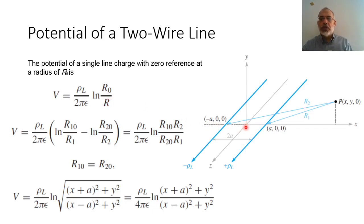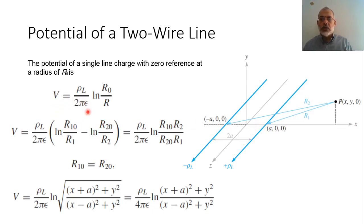Assuming that the potential equals zero between the two lines, the origin is taken as the reference point where V = 0. We have a positive line charge +rho_l and a negative line charge -rho_l. The potential contribution due to the positive charge is rho_l over (2π ε) multiplied by ln(r₁₀ over r₁), where r₁₀ is the distance from the origin to the first line.